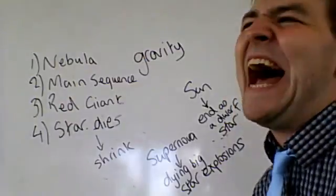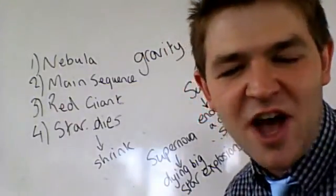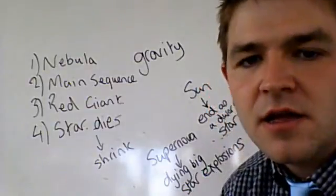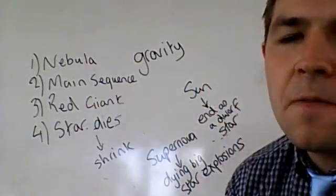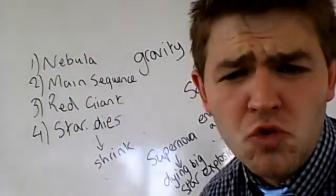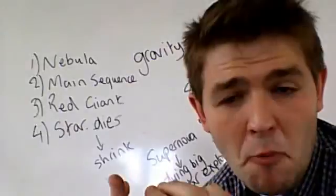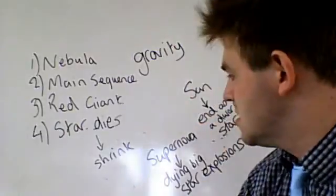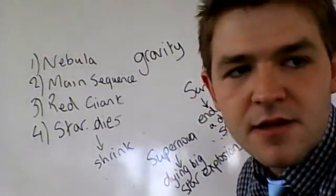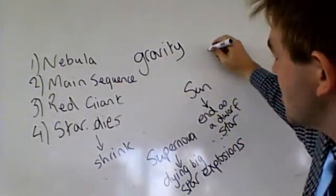The biggest of the biggest supernovas are from Suns at least ten times the size of our Sun, if not even bigger. They have a huge collapse and the pressure is so big when it collapses that instead of just exploding, you get what is called a black hole.